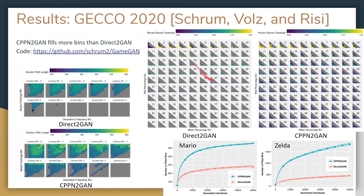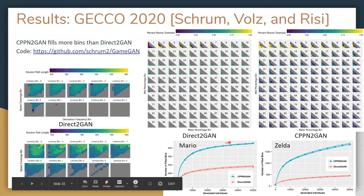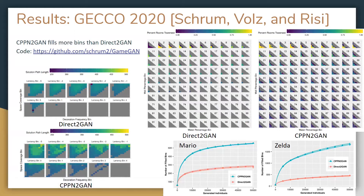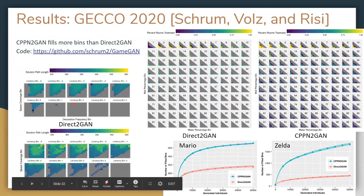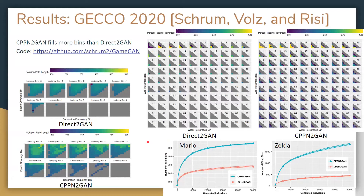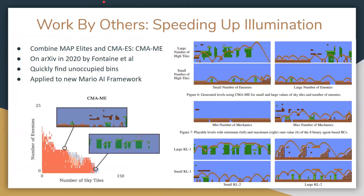The results, published at GECCO 2020, were analyzed mainly via heat maps. The core takeaway: comparing heat maps from direct GAN to those from CPPN-to-GAN, the CPPN-to-GAN approach fills more bins in the space with higher intensity, meaning higher quality. We're basically able to fill the space of possibilities much better. We also did this in Mario — there, the only coordinate is x, so patterns are across a line basically — but you can still do it, and we fill more of those bins too, with the blue line showing CPPN-to-GAN and red showing direct GAN.